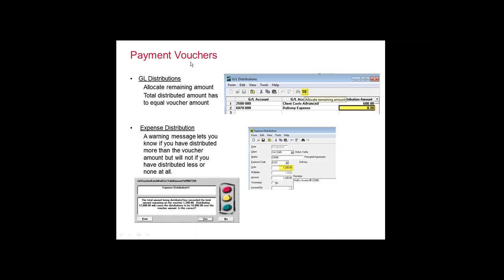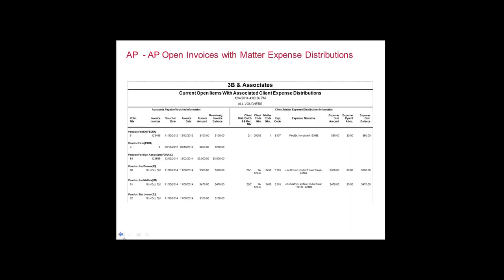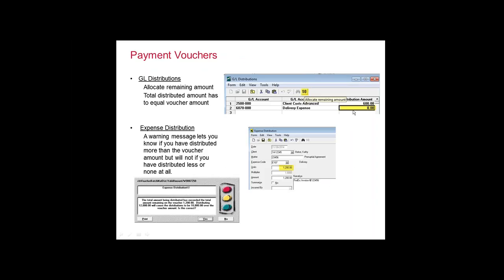Within a payment voucher, you can drill down and put in the GL distribution. If the vendor itself does not have a default GL distribution, you have to drill down and specify one. For a vendor like FedEx, you might have half going to client cost advance and part to firm delivery expense. The icon at the top — the dollar sign with zero — if you left-click on it, it's going to allocate the remaining amount of that GL voucher in that field, so you don't have to calculate what's left. You can put in multiple GL accounts as long as you distribute the full amount of the payment voucher.